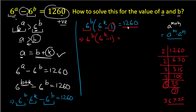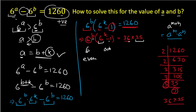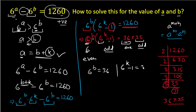We can write 6^b × (6^k − 1) = 36 × 35. Any power of 6 always ends in 6, so 6^b is even. Similarly 6^k is even, making 6^k − 1 odd. So we match the even factor: 6^b = 36, and the odd factor: 6^k − 1 = 35.